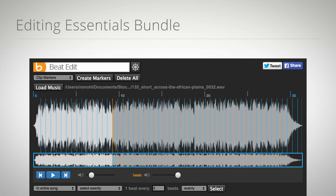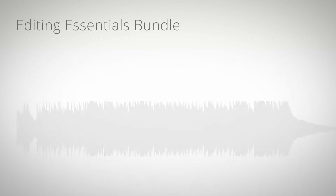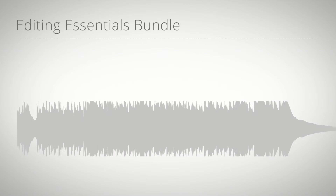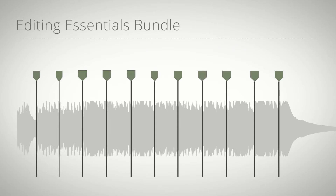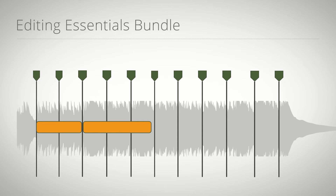A great edit is one that has a great rhythmic flow with the music. BeatEdit automatically detects beats in the music and represents them as markers in the Premiere Pro timeline. This can be the basis of a new edit or can be used to make fully automatic edits sync to music.